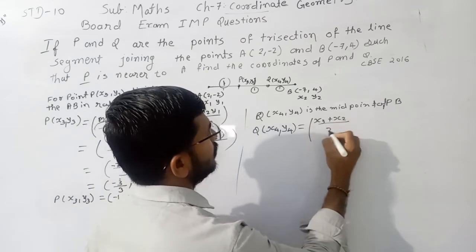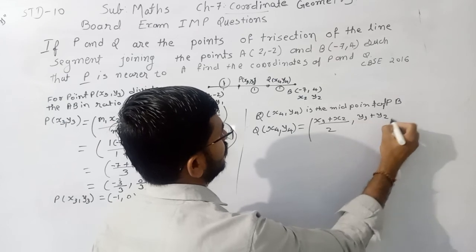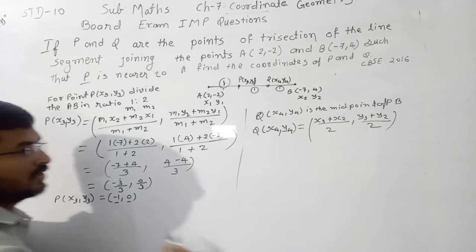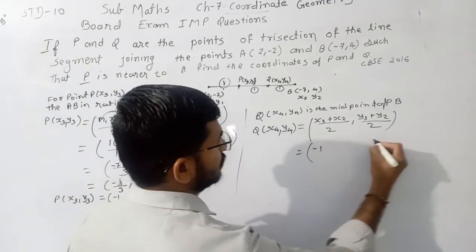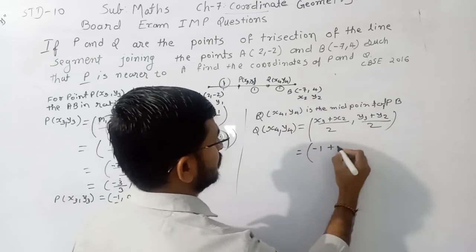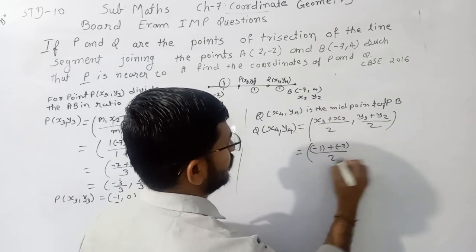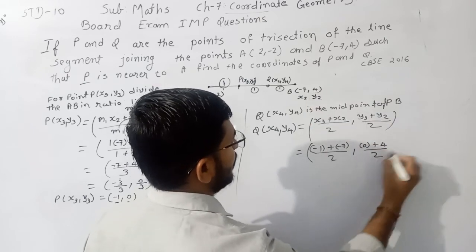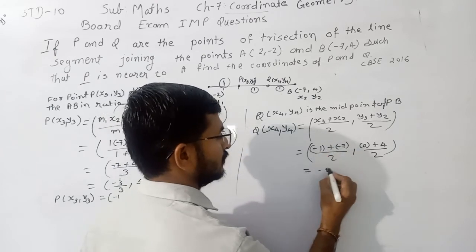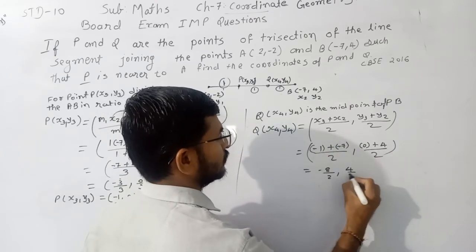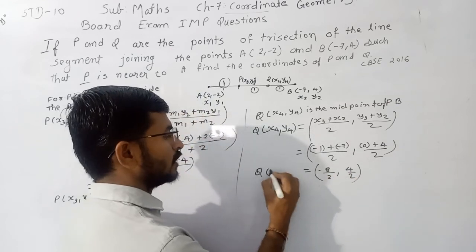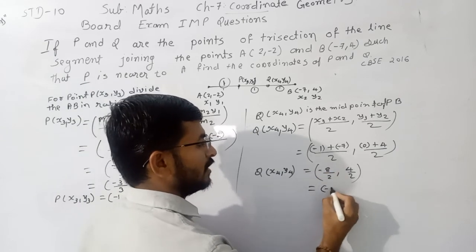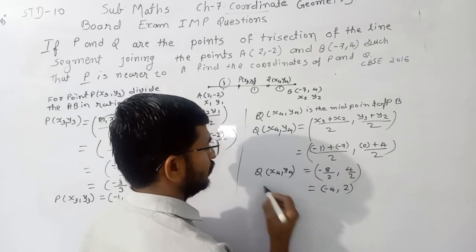Now we have the value of x3 is -1 and y3 is 0. -1 plus x2's value is -7, divided by 2, and y3's value is 0 plus y2's value is 4, divided by 2. -7 minus 1, -8 divided by 2, and 4 by 2. Now value Q, X4Y4, -8 by 2 you get answer -4, and 4 by 2 you get answer 2.